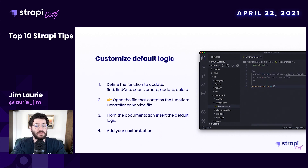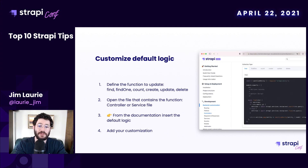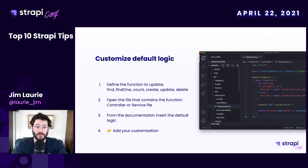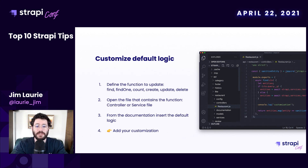Copy the default function from the documentation, paste it in your controller file, and add your custom logic. This customization will be applied only for routes that call this controller function. And it's exactly the same approach for services.